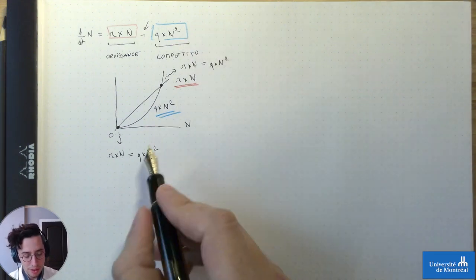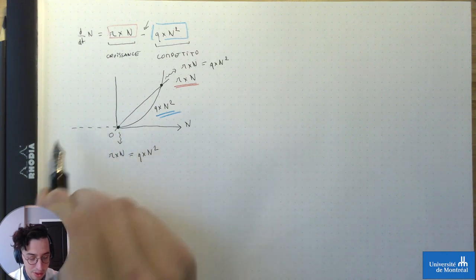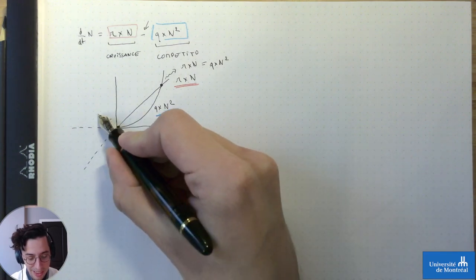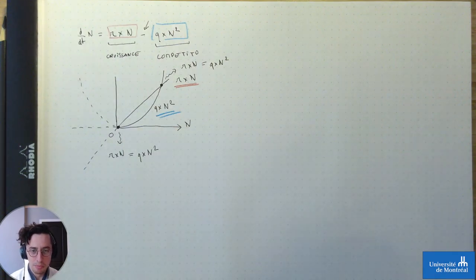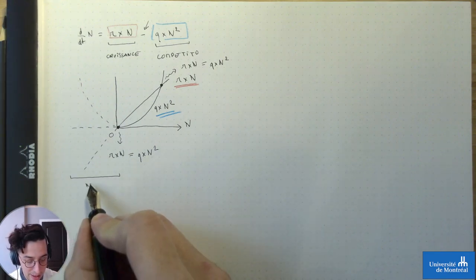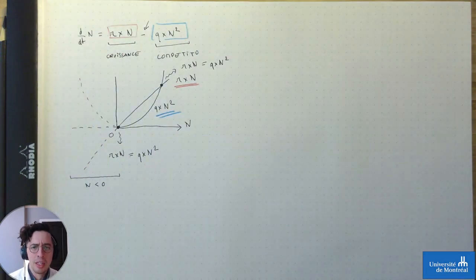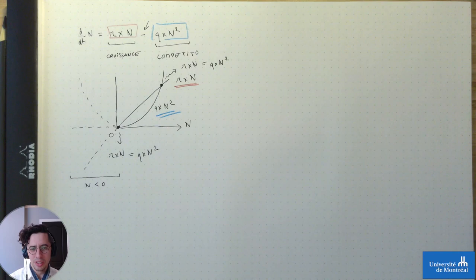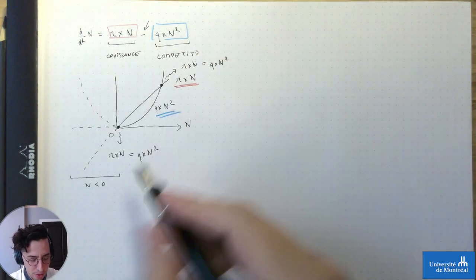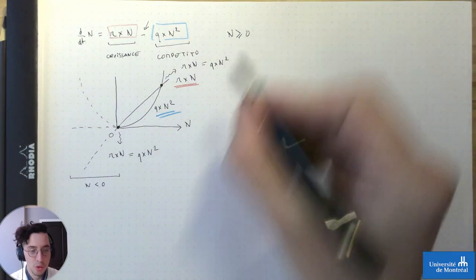La deuxième chose qu'on a apprise, c'est qu'on a choisi de donner à notre axe des n uniquement des valeurs positives. Évidemment, toutes ces fonctions continuent pour des valeurs de n négatives. Mais toute cette zone correspond à n<0. N<0, autant ça peut faire du sens d'un point de vue mathématique, autant d'un point de vue biologique, ça ne va jamais se produire. Parce que n, c'est une taille de population, par définition nécessairement positif ou nul. Donc, comme contrainte dans notre modèle, n doit être supérieur ou égal à 0.